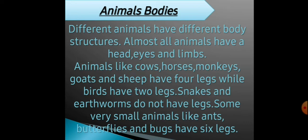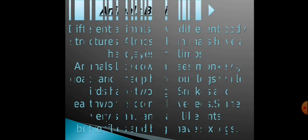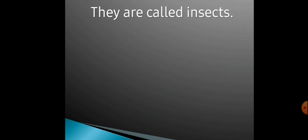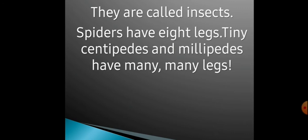Some very small animals like ants, butterflies and bugs have six legs. Matlab jo bahut chote chote animals hote hain, unko six legs hote hain. They are called insects. Spiders have eight legs. Tiny centipedes and millipedes have many legs. Jo spiders hote hain, unko eight legs hote hain, aur tiny centipedes aur millipedes ko bahut saare legs hote hain.